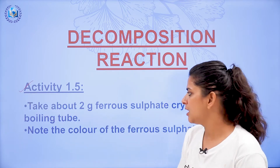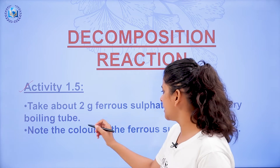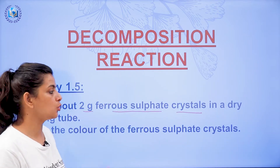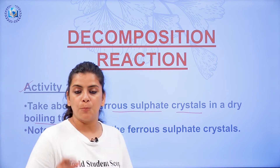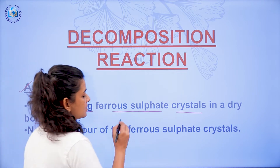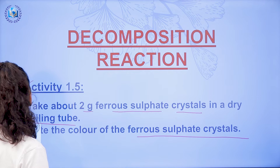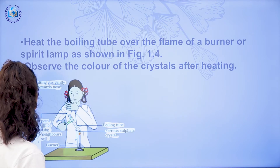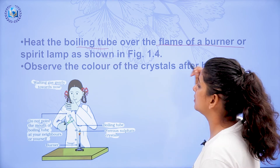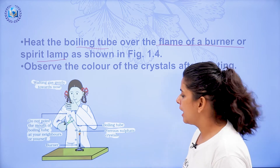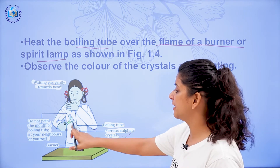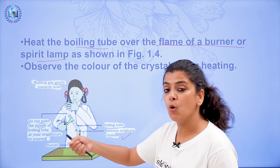Let us start with the procedure. First, take about 2 grams of ferrous sulfate crystals in a dry boiling tube. A dry boiling tube means no liquid is present in it. Take 2 grams of ferrous sulfate crystals and note the color of the ferrous sulfate crystals — you need to remember what color they are. Then heat the boiling tube over the flame of a burner or spirit lamp as shown in Figure 1.4.